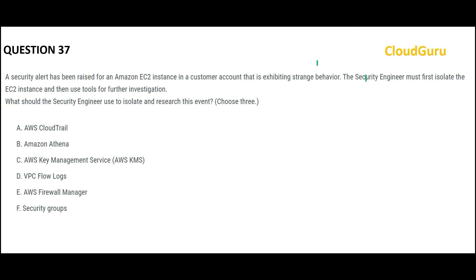A security alert has been raised on an EC2 instance in a customer account, and it is exhibiting strange behavior — like someone who entered a building and is monitoring around suspiciously. The security engineer must first isolate the EC2 instance and then use tools for further investigation. What should a security engineer use to isolate and research this event? Just like a security guard who first checks the log — is there an entry, the person's name, phone number — we will do the same thing here.